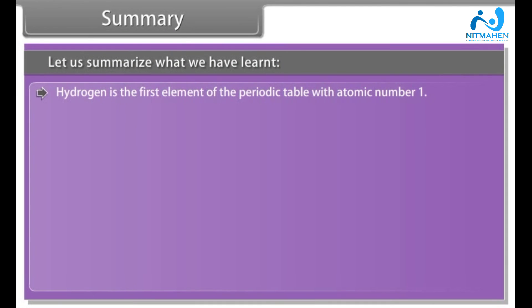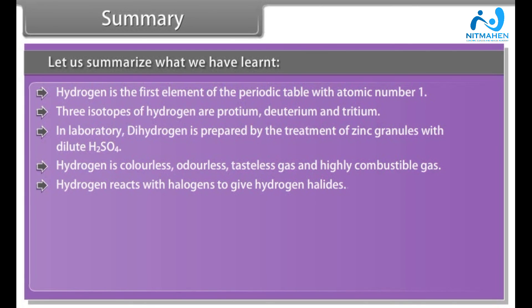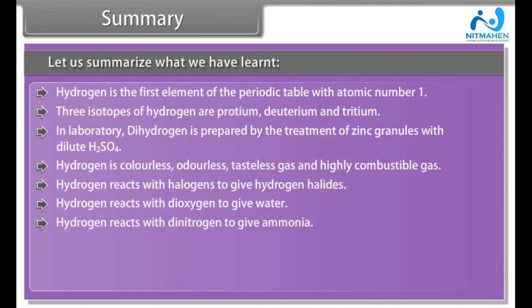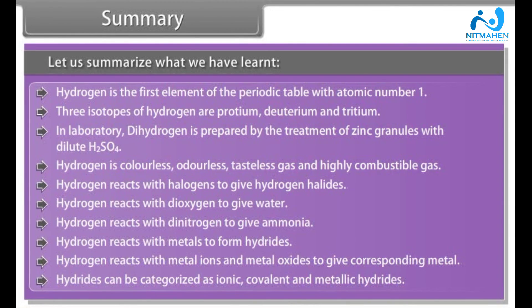Summary. Let us summarize what we have learned. Hydrogen is the first element of the periodic table with atomic number 1. Three isotopes of hydrogen are protium, deuterium and tritium. In laboratory, dihydrogen is prepared by the treatment of zinc granules with dilute sulphuric acid. Hydrogen is colorless, odorless, tasteless gas and highly combustible gas. Hydrogen reacts with halogens to give hydrogen halides. Hydrogen reacts with dioxygen to give water. Hydrogen reacts with dinitrogen to give ammonia. Hydrogen reacts with metals to form hydrides. Hydrogen reacts with metal ions and metal oxides to give corresponding metal. Hydrides can be categorized as ionic, covalent and metallic hydrides.